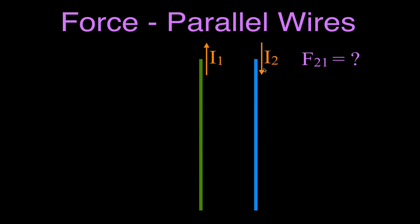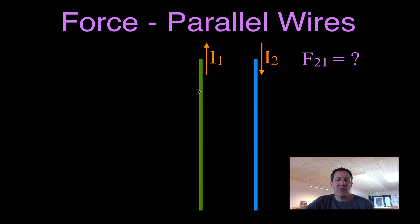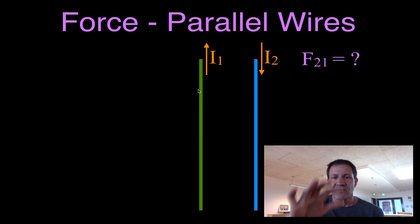This is wire number two, which has current two flowing through it downward. This is wire number one, with current one flowing upward. We want to know the force on two due to number one. When you have a long straight wire with a current flowing through it, you're going to have a magnetic field around that wire, and you can use the right-hand rule to determine the direction of that magnetic field.